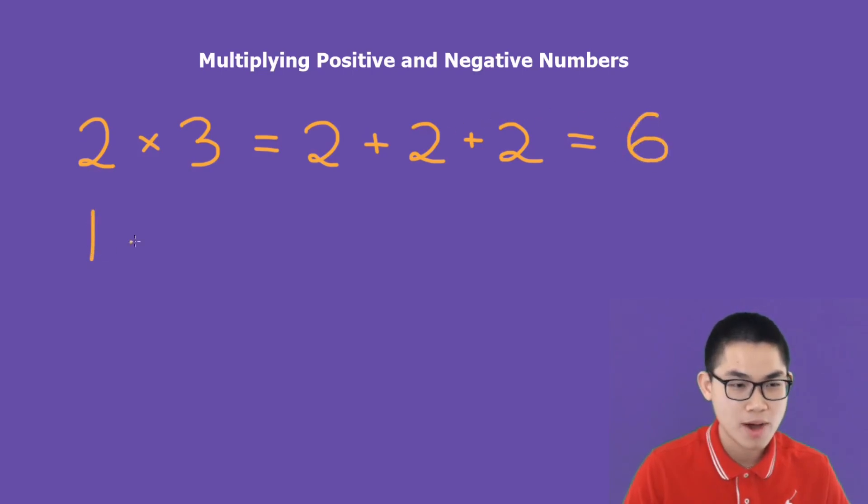How about 1 times 4? That's going to be 1 plus 1 plus 1 plus 1. So we add 1 together 4 times, and that gives you 4.